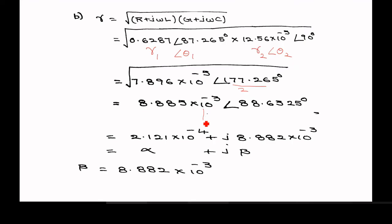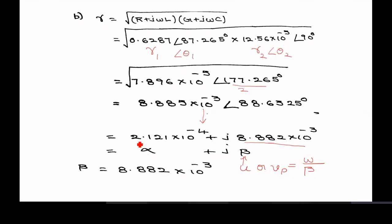Converting this polar result back to rectangular form gives alpha plus j beta. The real part is the attenuation constant alpha and the imaginary part is the phase constant beta. This polar-to-rectangular conversion is required in order to find the phase velocity. The beta value obtained is 8.882 into 10 to the power of minus 3.